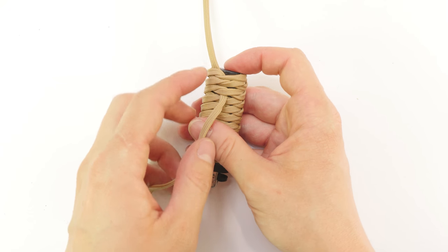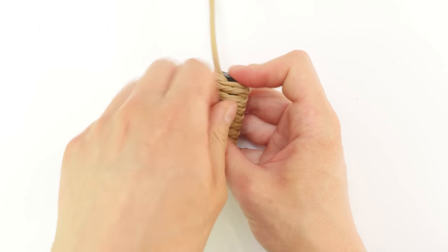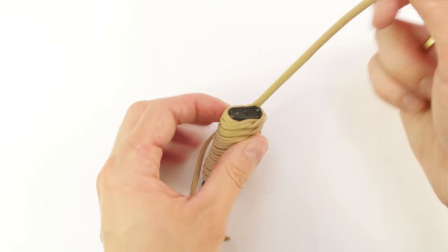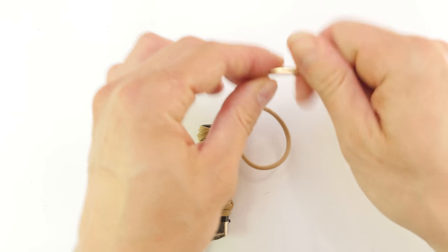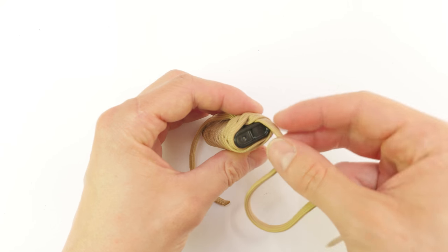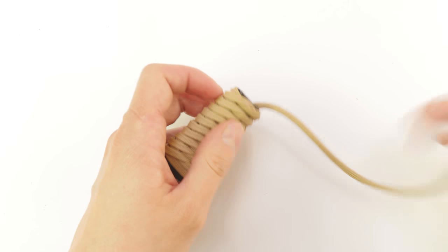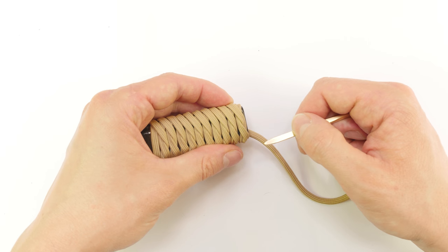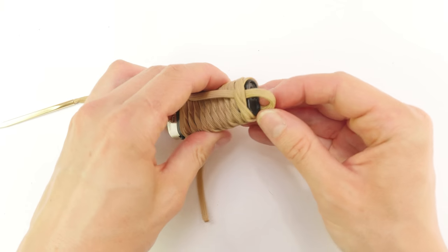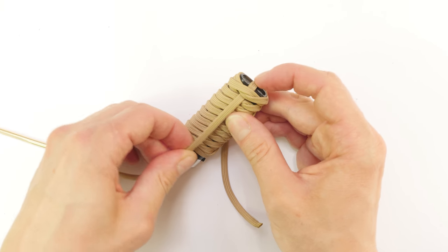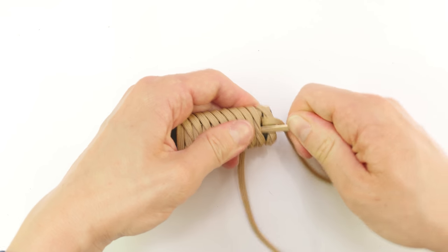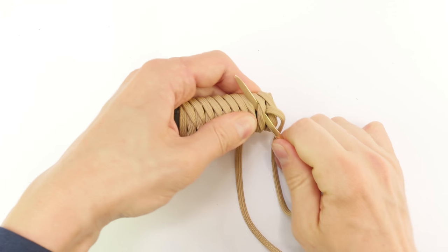Once you feel that this end is fairly secure, we're going to move on to the other end. So this one is going to the other side, and we're going to start at the first half knot. Tuck it under a few more.